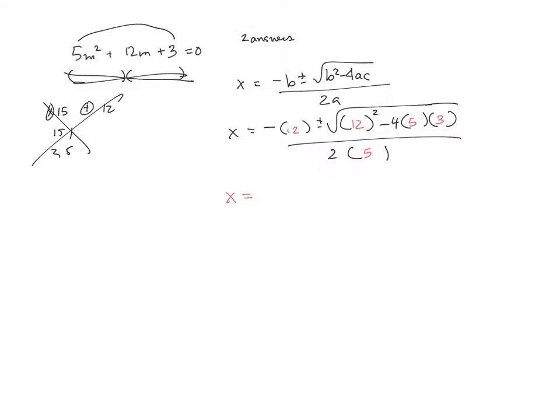All right, so I'll get negative 12 plus or minus the square root of 144. 4 times 5 is 20, and 20 times 3 is 60. So that would be minus 60. Over 2 times 5 is 10.